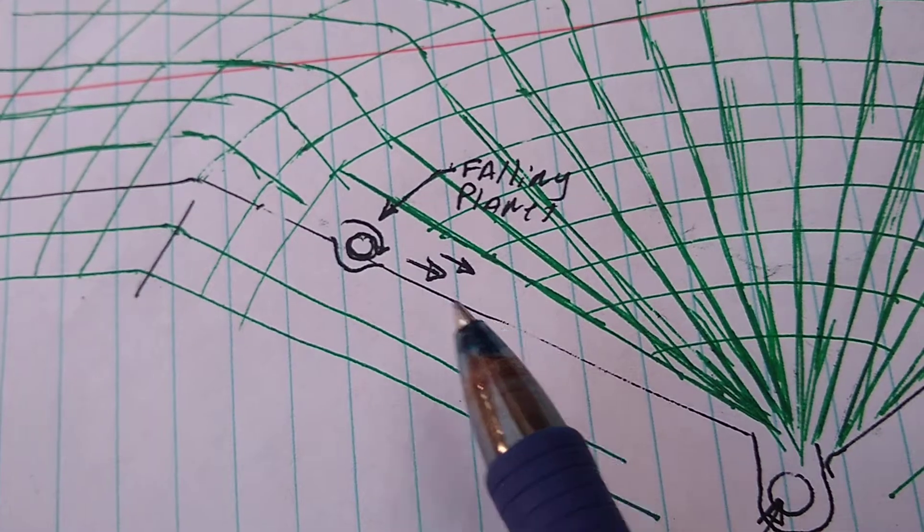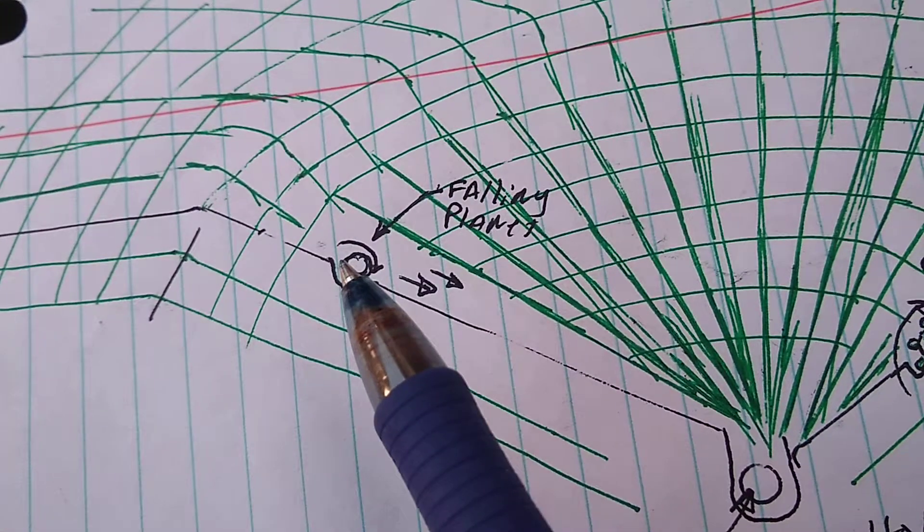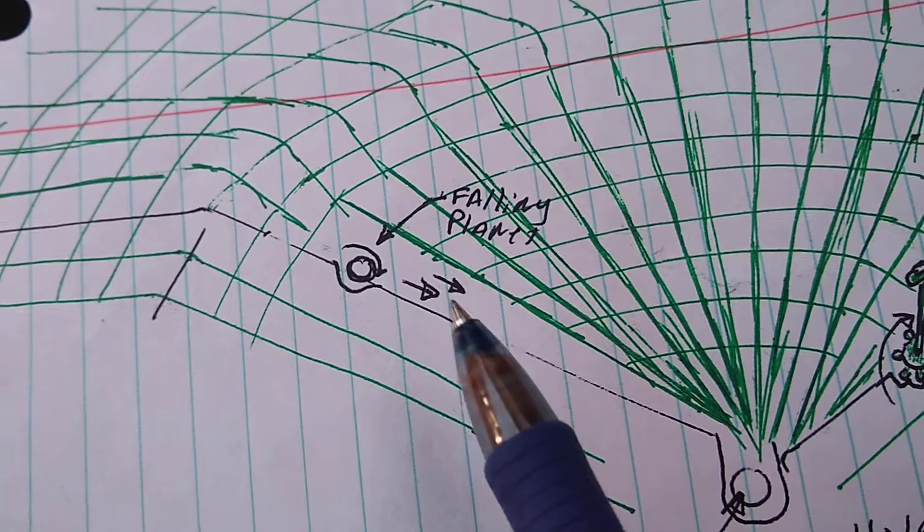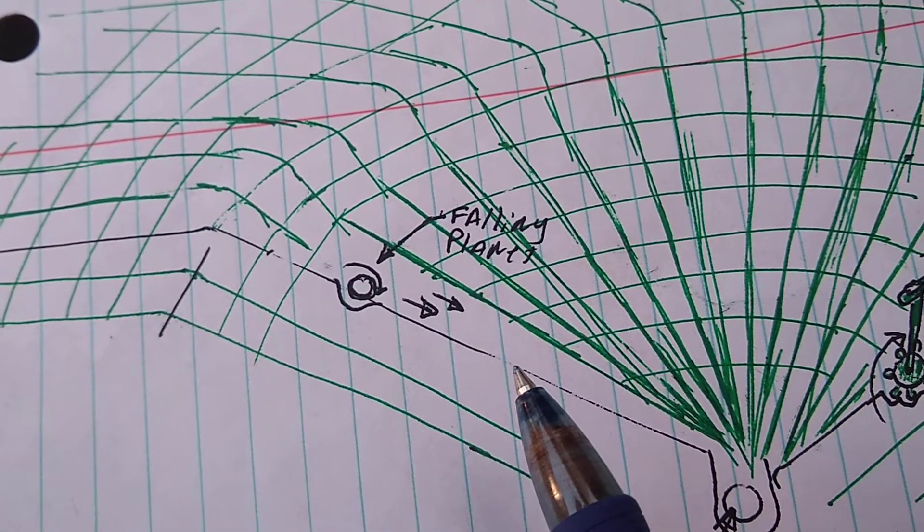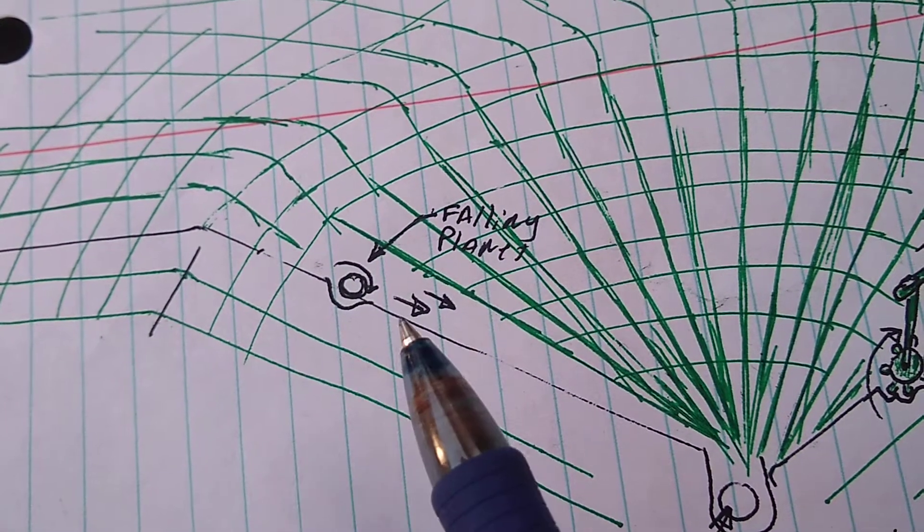So when a planet is rolled to the black hole, basically it's like going downhill. The gravity pulls it and gains speed because of its own gravity. It's being pulled this way.